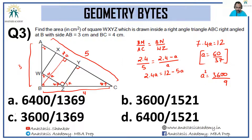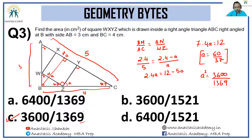37 squared is 1369, and even if you don't know that, the unit digit 9 identifies the answer as option C.